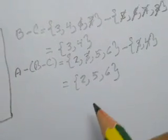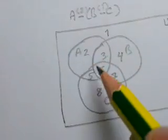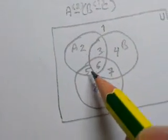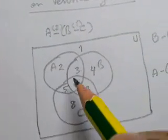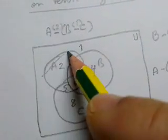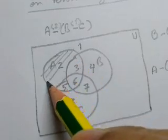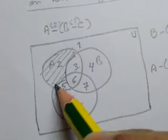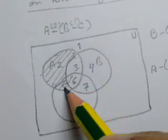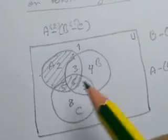Shade three regions: 2, 5, and 6. Remove 3 from A, remove 4 from A. The answer is regions 2, 5, and 6.